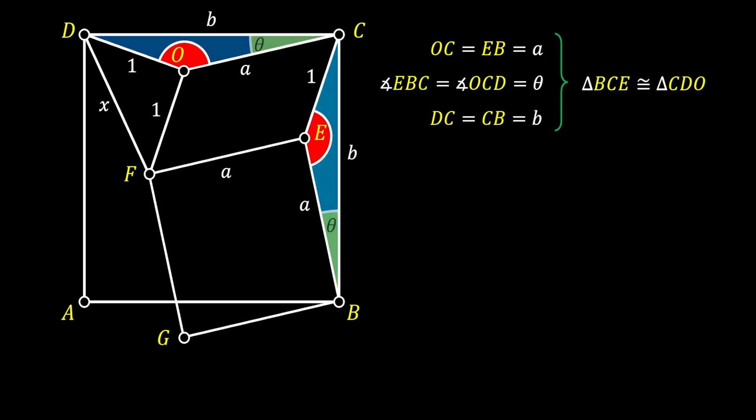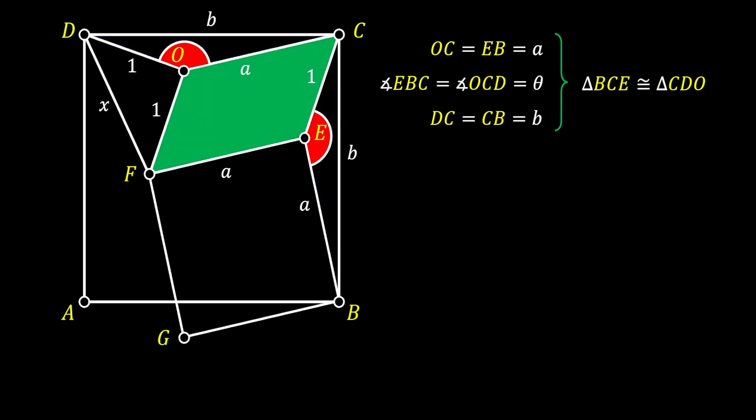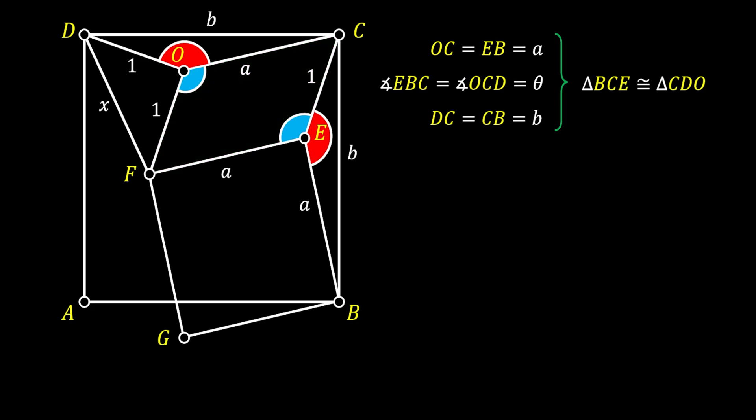Now, from before, we know that FECO is a parallelogram. And we also know that one of the properties of parallelogram states that the opposite angles are equal. So this means that the angles at the point E and the point O on this parallelogram are actually equal. Now, since the angle FEB is the angle of the square, it is a 90 degree angle, which leads us to conclude that the remaining angle DOF at the point O must be 90 degree angle as well.